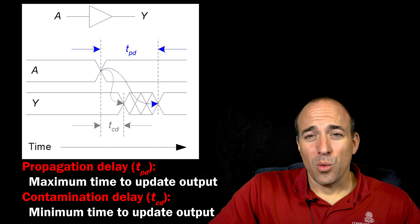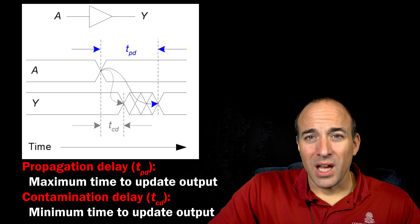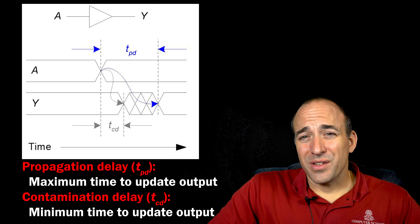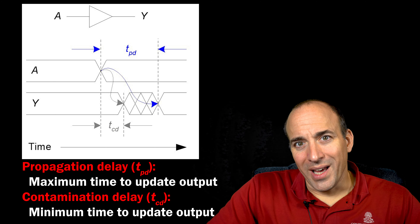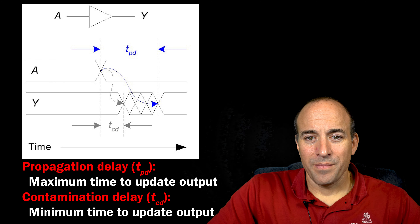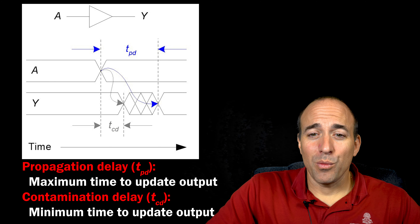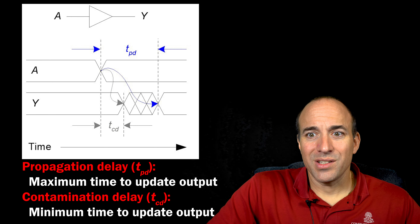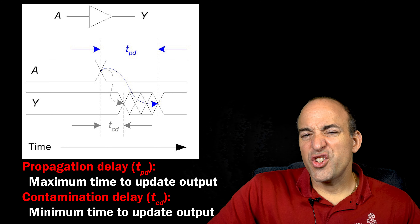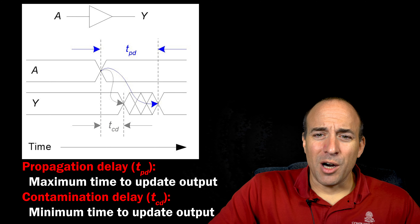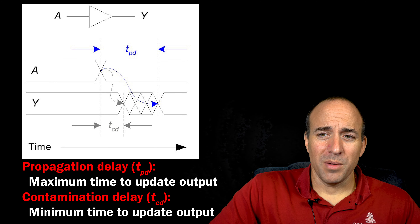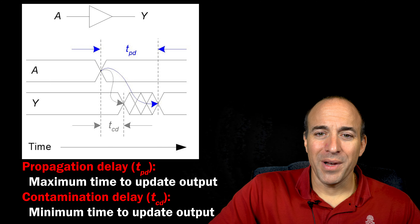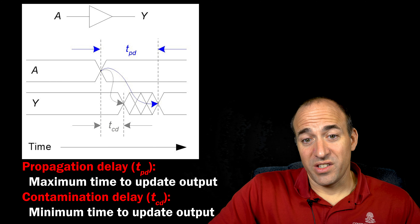In other words, T-PD is when the output stabilizes as a result of the input changing. However, the propagation delay is the maximum amount of time it will take for the output to update. Sometimes a gate's output will require a shorter amount of time to change and stabilize in response to an input change. The soonest a gate's output will change in response to an input change is called the contamination delay, or T-CD.